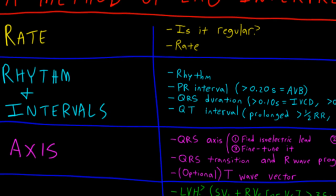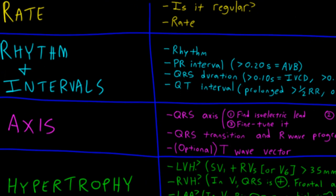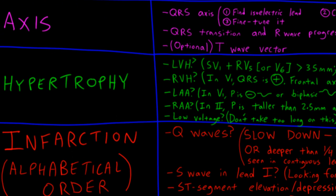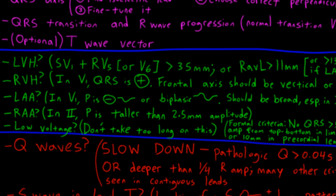I take a look at the intervals. Then I look at axis. Then I look for signs of chamber abnormalities. This step is really important. And so for each of these, I ask myself, are there signs of LVH? Are there signs of RVH? Do we have evidence of left atrial enlargement? How about right atrial enlargement? How about low voltage?